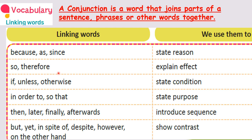It rained heavily, so the people left the place. What was the outcome of the rain? People left the place. We are using 'so.' It rained so heavily and it flooded, so people left the place — evacuated from the place. Same, you can use 'therefore' also: 'It rained so heavily and the area was flooded; therefore, the people left the place.' Is it easy?